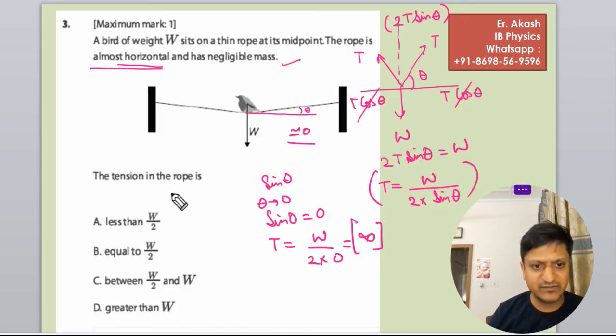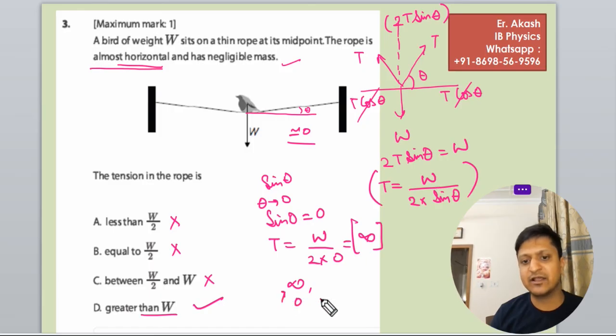In this range, the answer is less than W by 2? No. Equals to W by 2? No. Between W by 2 and W? No. Greater than W? Yes, of course. At 0, it is infinity. And for angle 1, 2, it would be greater than W.